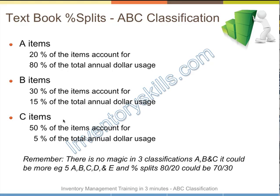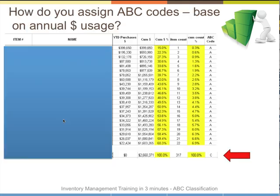There's no magic in three classifications A, B, and C. You could have five — A, B, C, D, and E — whatever you want, depending on the degree of control you want of your inventory. And the splits don't have to be 80-20; it could be 70-30. It's the proportion that's important to you.